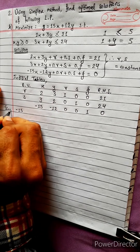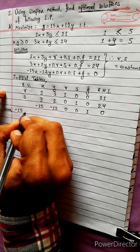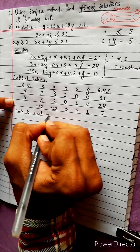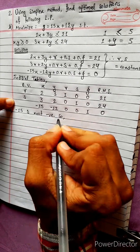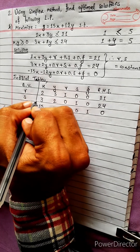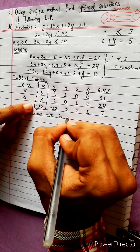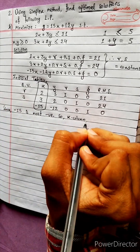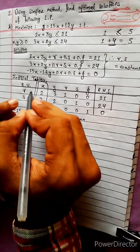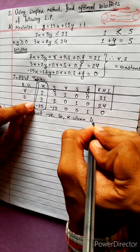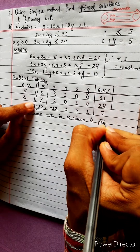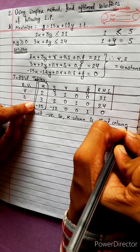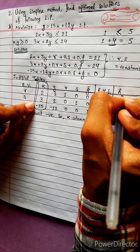Since minus 15 is the most negative element, the X column is the pivot column. We now work out the ratios for the pivot column.